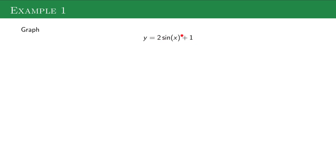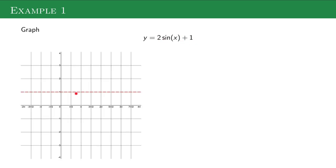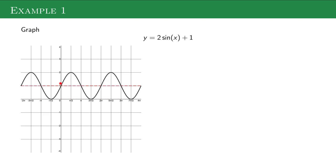If I go to graph, the first thing I'm going to do is put this 1. That becomes the midline. I move my graph up from 0 to 1. Then I can graph my normal sine function. So this is just sine of x plus 1.